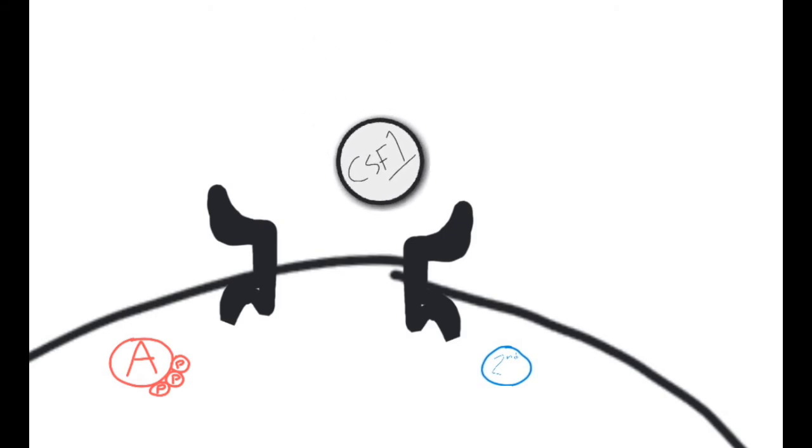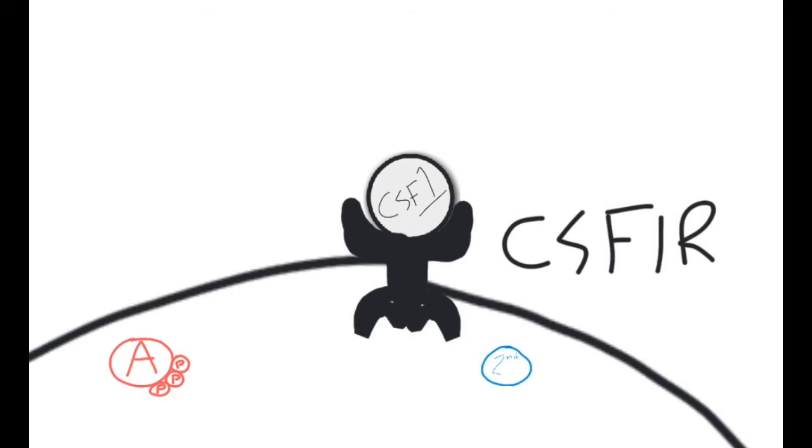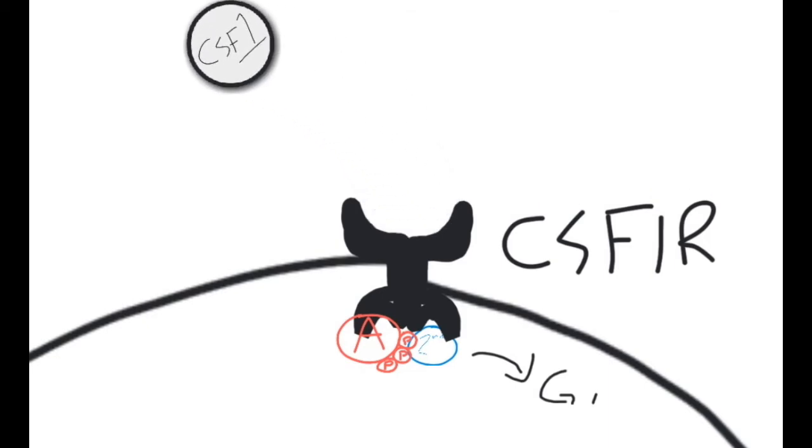CSF1 binds to a cell surface receptor called CSF1R. This is a tyrosine kinase that can move a phosphate from ATP onto a second messenger. That activates the second messenger, which in turn allows this cell to pass through the G1 cell cycle checkpoint. In tenosynovial giant cell tumor, there's a mutation in this receptor, which means that it's always activated even in the absence of the CSF1 hormone. This leads to an overproduction of monocytes. The authors targeted this receptor with a drug that would bind and prevent the activation of the second messenger, thus stopping the cell from entering the mitosis phase.